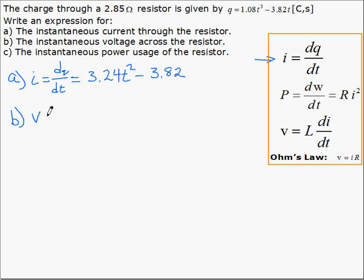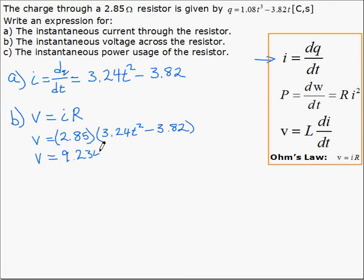So the voltage is going to be 2.85, which is the resistance, multiplied by I, which is 3.24T squared minus 3.82. And simplifying that gives us 9.234T squared minus 10.887.